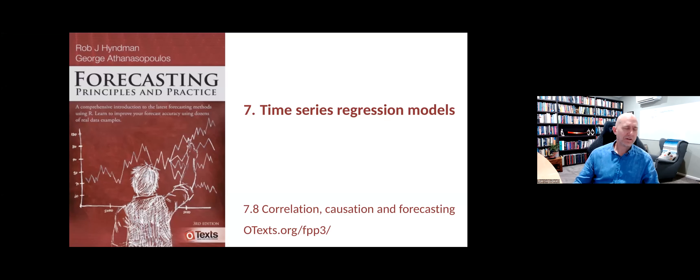If you've done a regression course outside of the forecasting world, you will almost certainly have been told two things. One is correlation is not the same as causation, and so you need to be careful when you're interpreting the model. And secondly, beware of multicollinearity. In the forecasting context, these two things need to be treated slightly differently. So let's look at them.